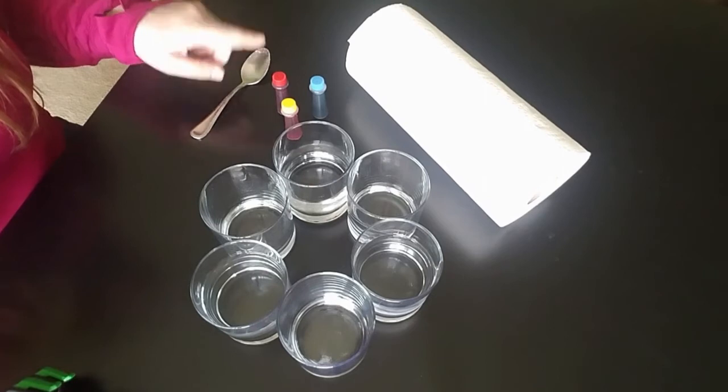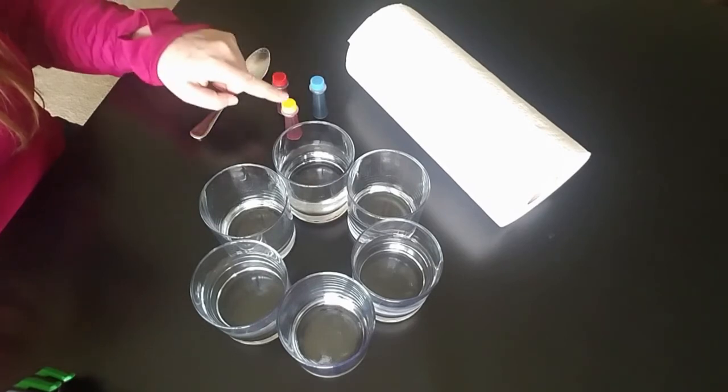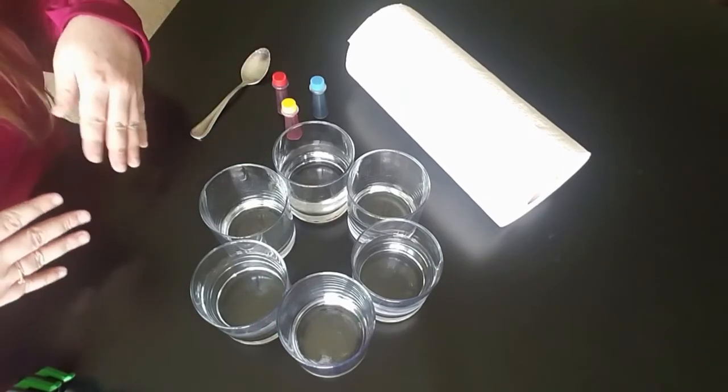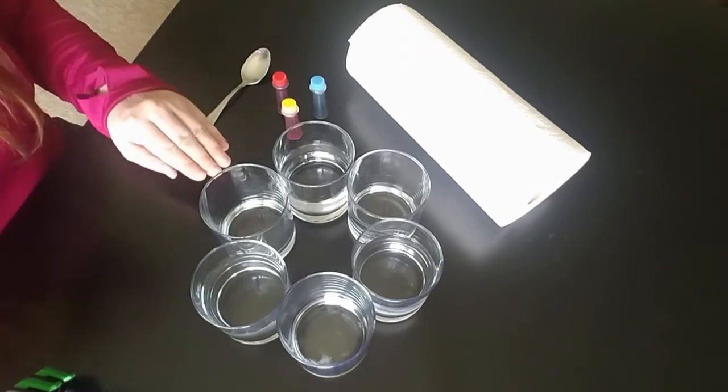The first step you're going to take your food coloring. I have blue, red, and yellow for the primary colors because then they are later going to mix and make the rest of the colors of the rainbow.